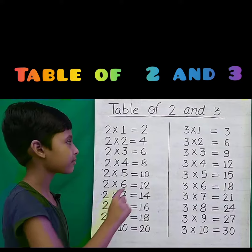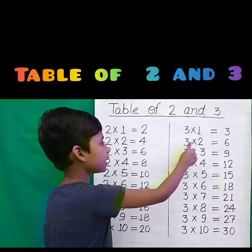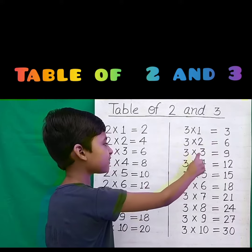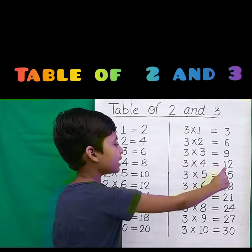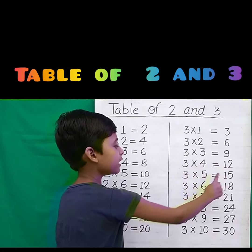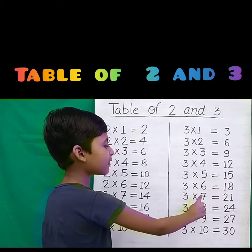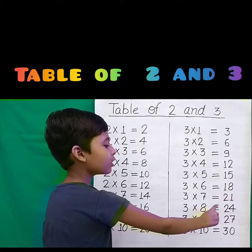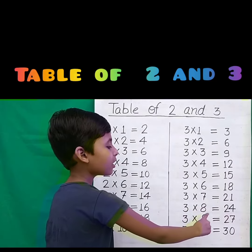3 1s are 3, 3 2s are 6, 3 3s are 9, 3 4s are 12, 3 5s are 15, 3 6s are 18, 3 7s are 21, 3 8s are 24, 3 9s are 27.